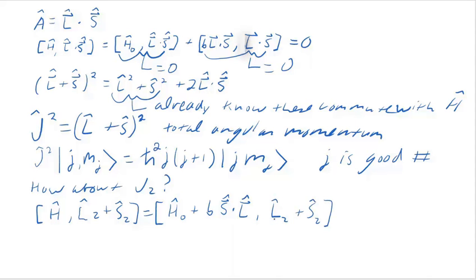The Z component of orbital angular momentum and spin angular momentum both commute with the hydrogen atoms unperturbed Hamiltonian. So that's done.